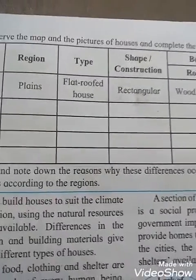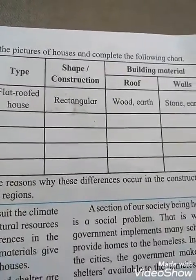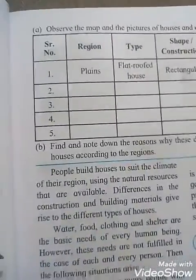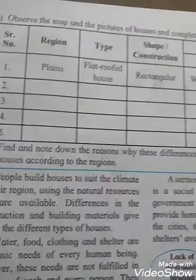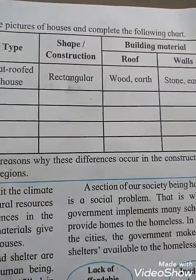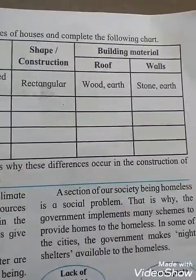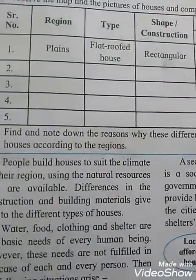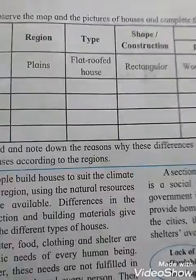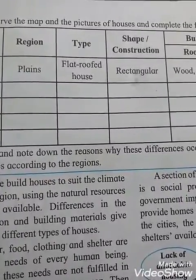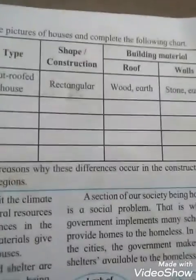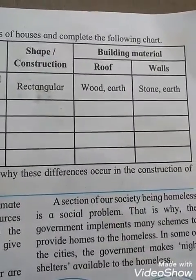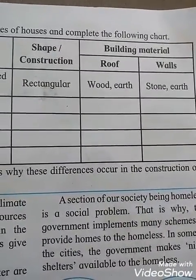Activity A1: Observe the map and pictures of houses and complete the following chart. The columns are serial number, region, type, shape, construction, building materials, roof and walls. For plain regions, flat roof houses are built. The shape and construction is rectangular. The roof is made of wood and earth, and the wall is stone and earth.